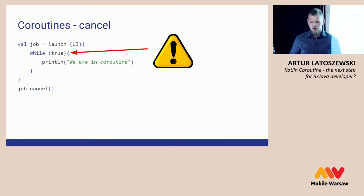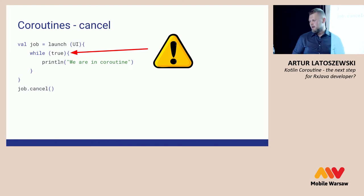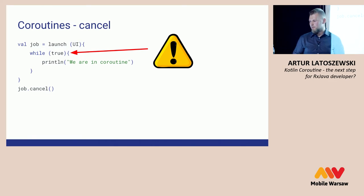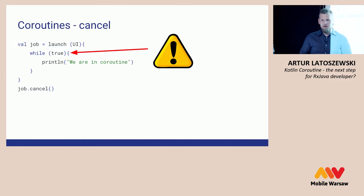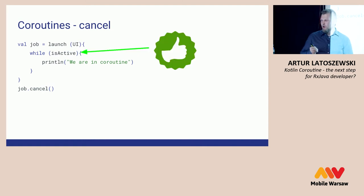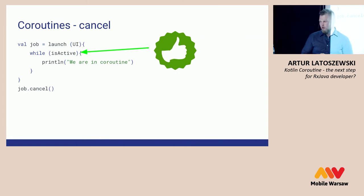More about canceling coroutines: there is no magic voodoo inside. When we call job.cancel on a coroutine, it will work forever because it doesn't know it was canceled. We have to check if the coroutine is still active. We have a global property "isActive" and we have to check it to know that the coroutine was canceled.